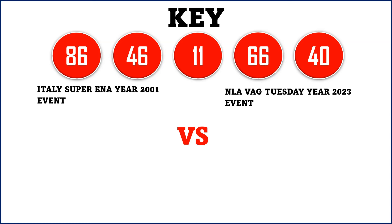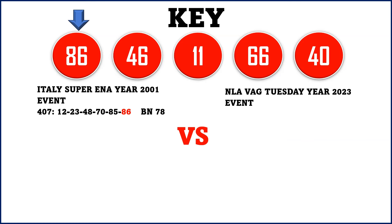The first sequence number is 86. For Super Enalotto results number 407, the numbers drawn were 12, 23, 48, 70, 85, and 86, with bonus number (BN) 78. For the NLA lotto results number 63, the numbers drawn were 13, 90, 21, 86, and 61. So the number 86 dropped in Super Enalotto and the number 86 also dropped in the NLA for results number 63.